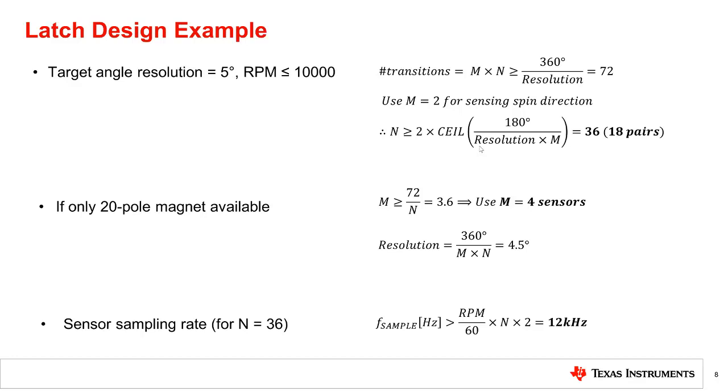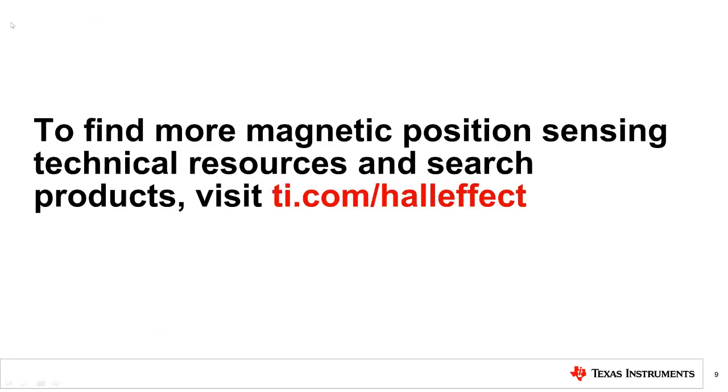The required sampling rate can be calculated directly from equation 4 and is satisfied by a number of devices including the DRV5011, DRV5013, and DRV5015. To find more magnetic position sensing technical resources and search products, visit ti.com/HallEffect.